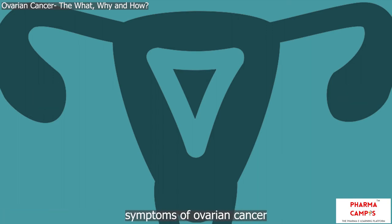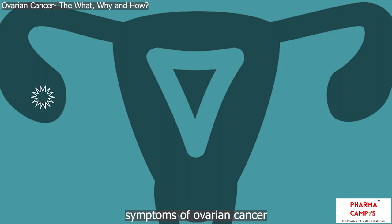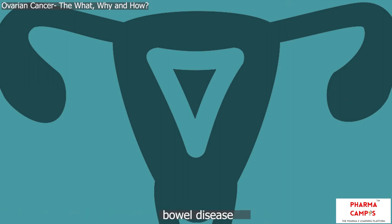The symptoms of ovarian cancer overlap with many other benign conditions, and thus it is difficult to attribute them to ovarian cancer. They arise in the late stages of cancer when there is involvement of the uterus, bladder, or rectum. They are common to premenstrual syndrome, irritable bowel disease, etc., and include the following.